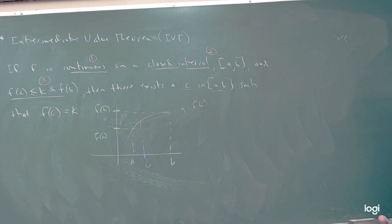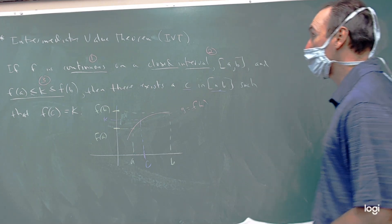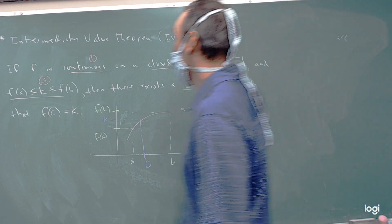So that's enough to get you to homework number 23. Then we can talk about section 2.4, rates of change and tangent lines.